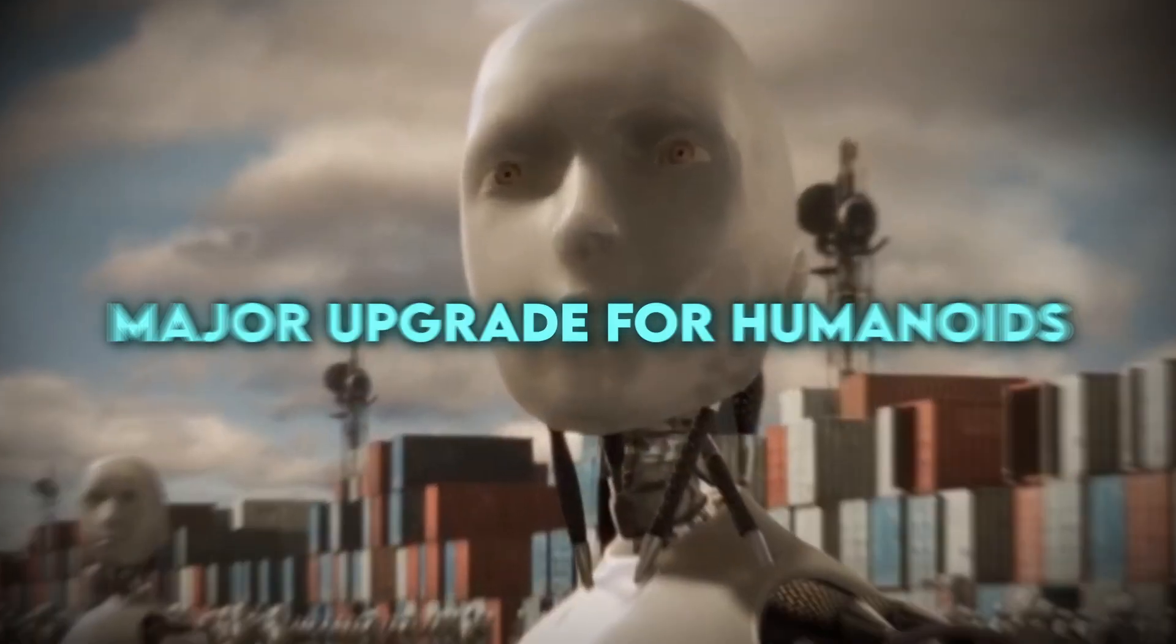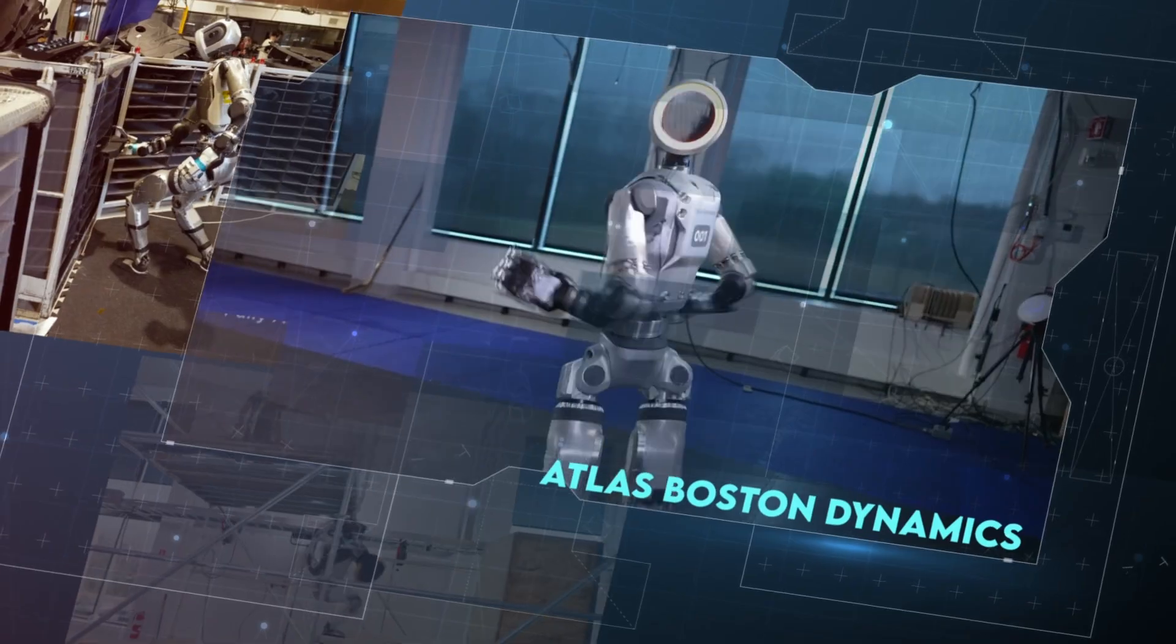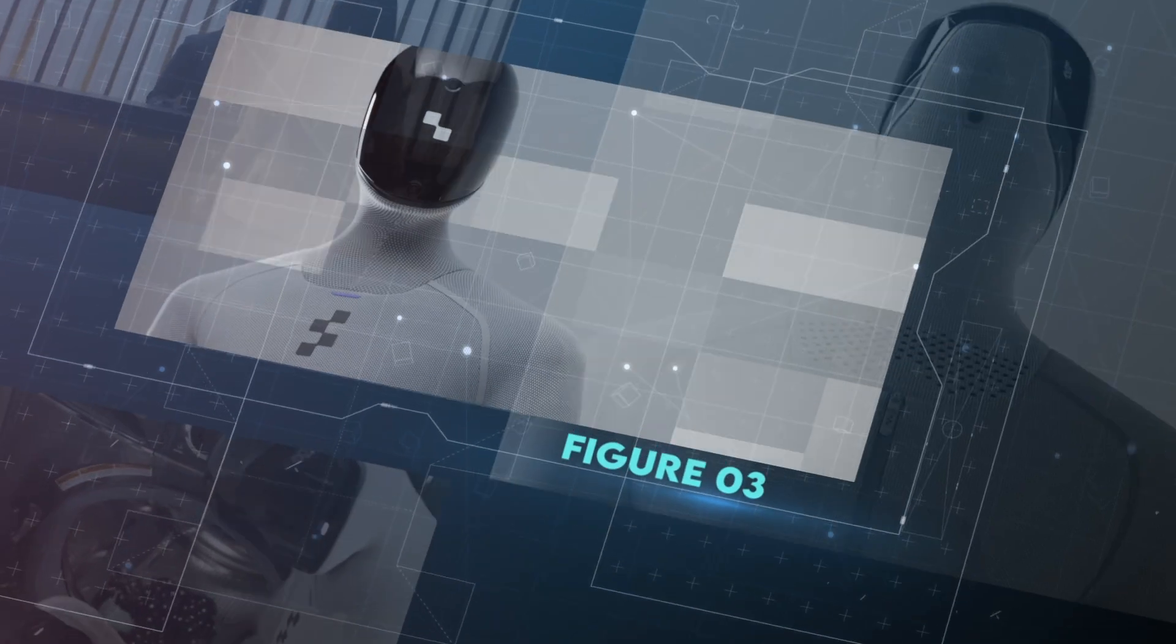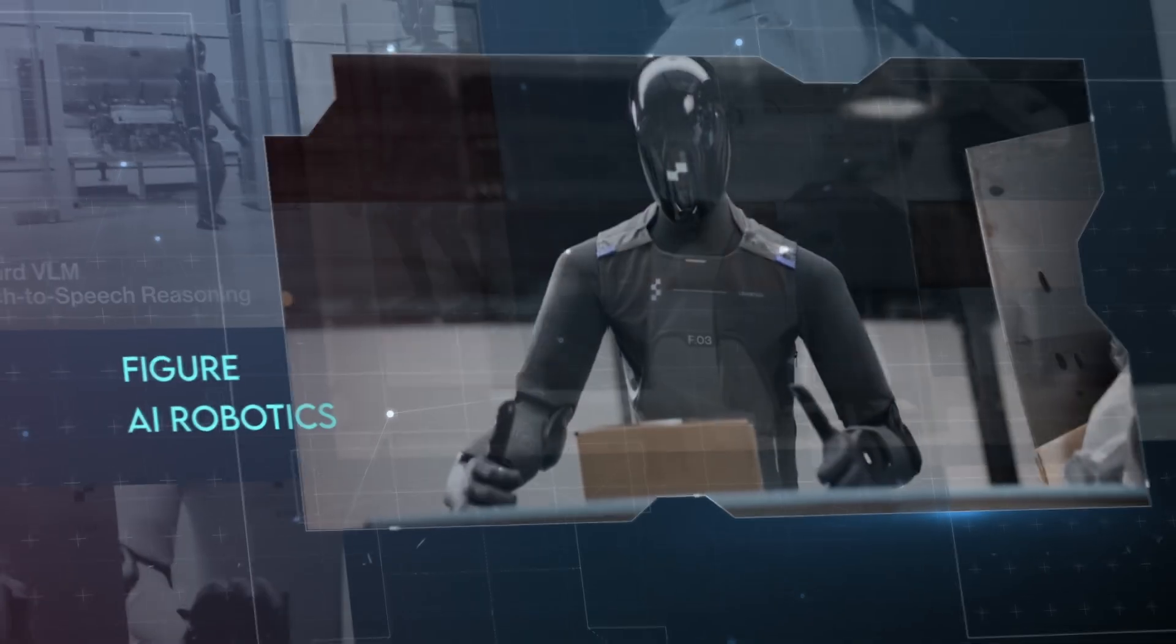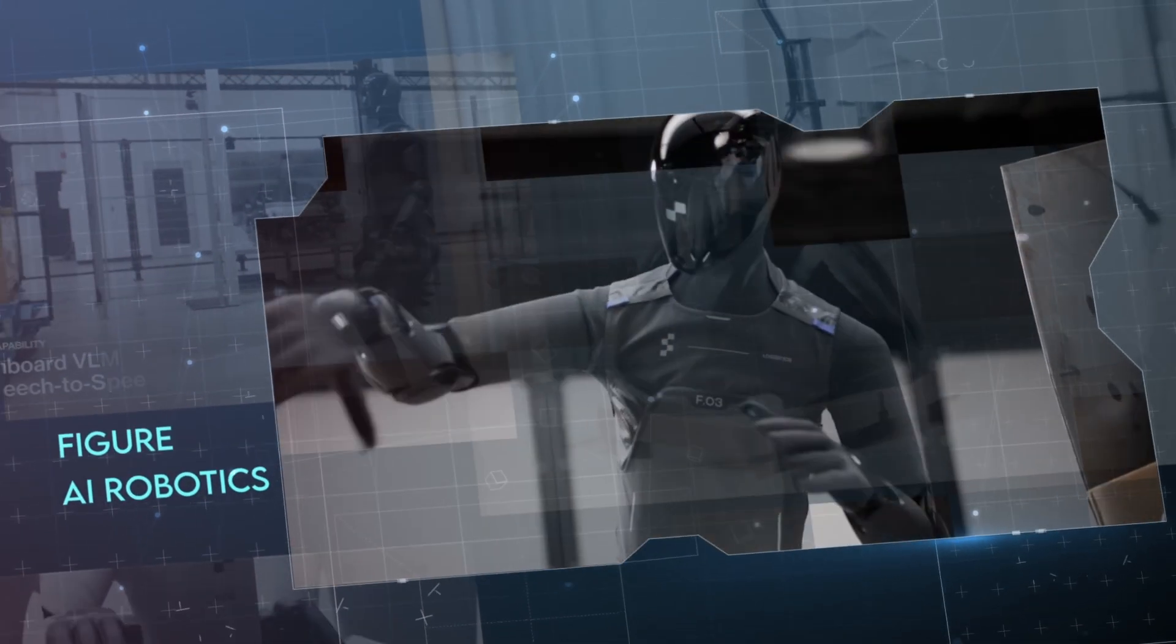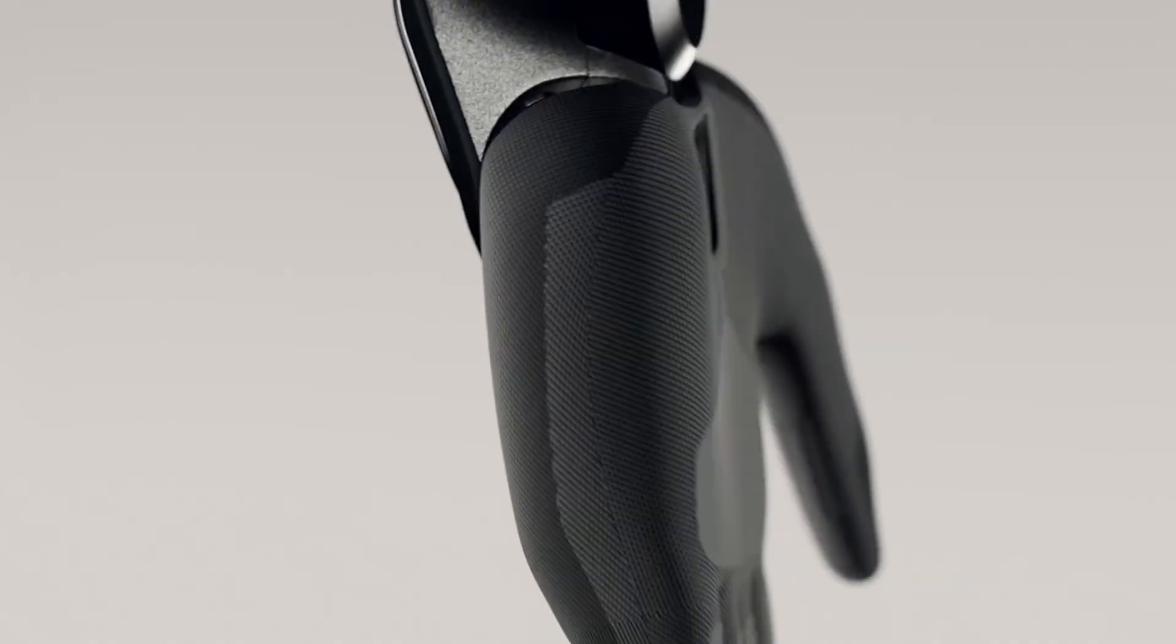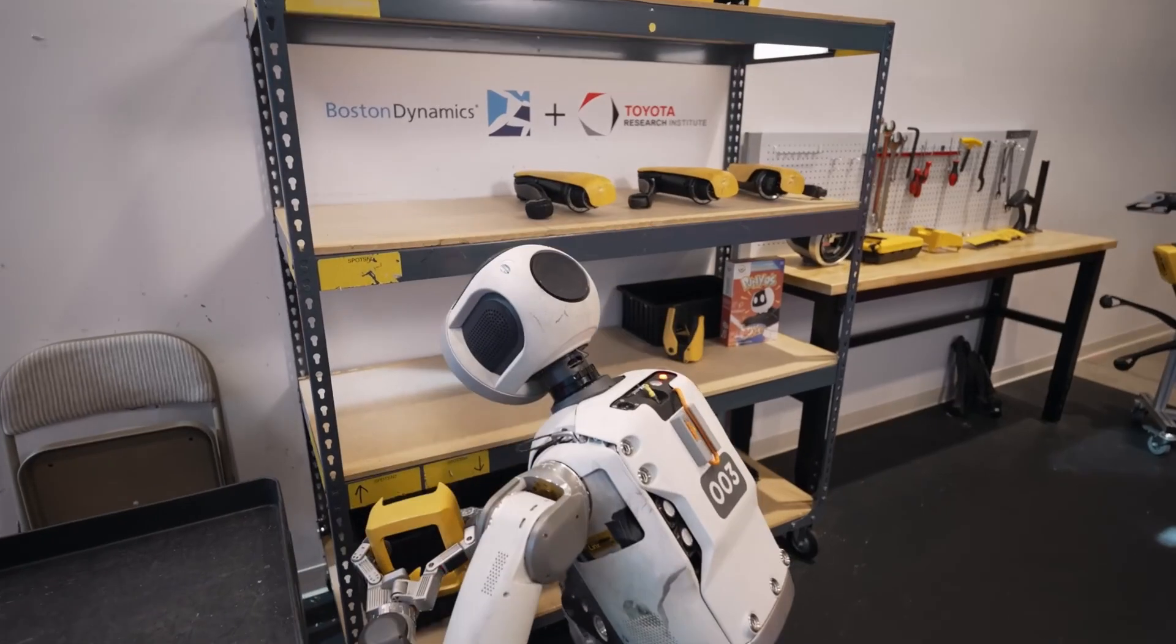Major upgrade for humanoids. Boston Dynamics just dropped a new Atlas update showing the most advanced gripper system they've ever built, while Figure revealed its third generation robot, Figure 0-3, complete with a rebuilt body, a smarter AI brain called Helix, and hands that can literally feel what they're holding. Both are making headlines for a reason, and it's easy to see why.